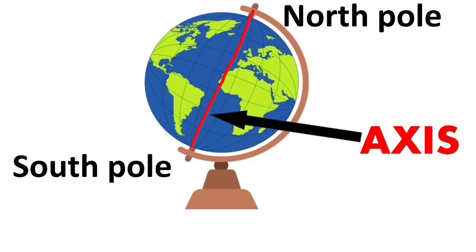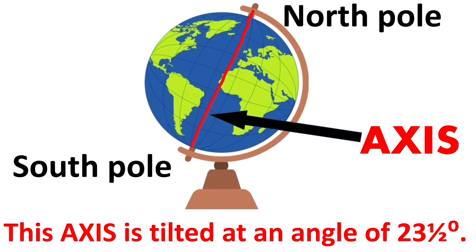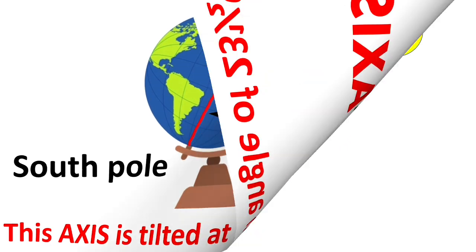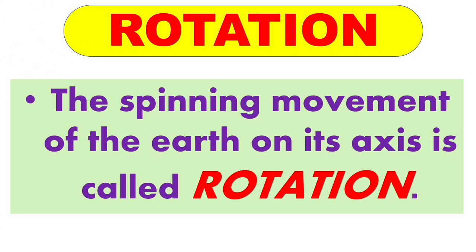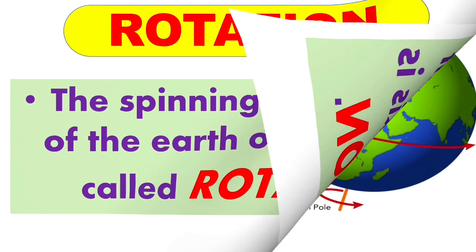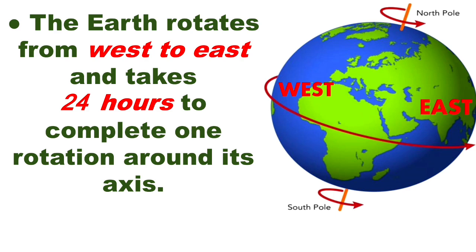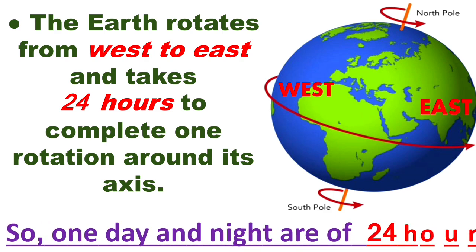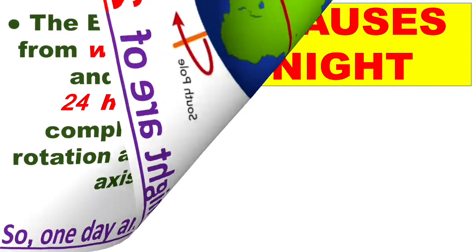The earth's axis is not vertical — the axis is tilted at an angle of 23 and a half degrees. Remember that. Now, the spinning movement of the earth on its axis is called rotation. The earth rotates from west to east and takes 24 hours to complete one rotation around its axis. So one day and night are of 24 hours. Rotation is the daily motion of the earth.